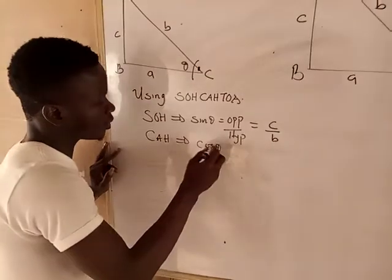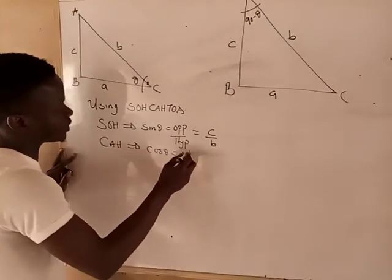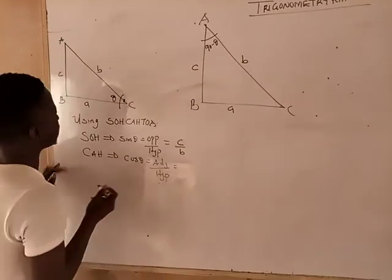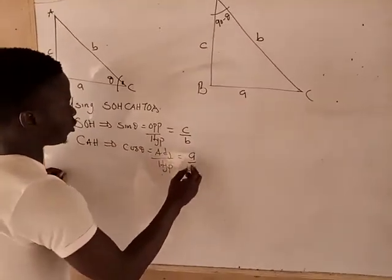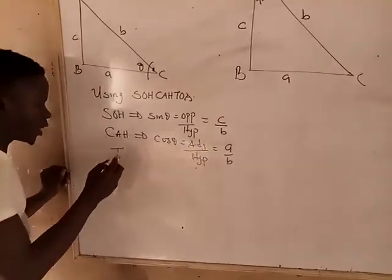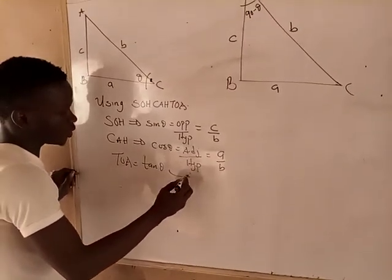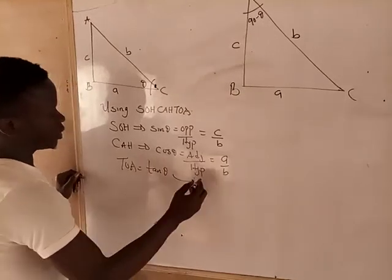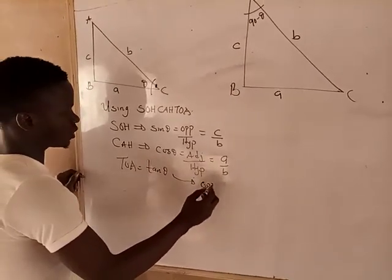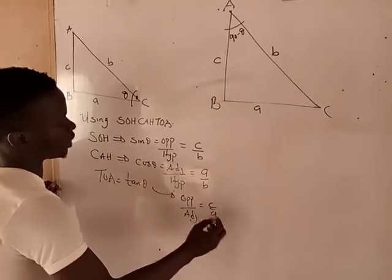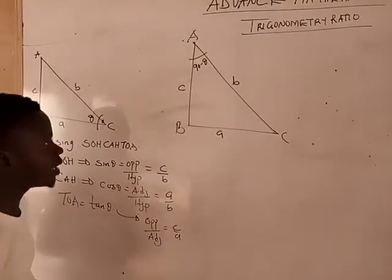Cosine theta, that is adjacent over hypotenuse, that will be giving us A over B. Tangent theta equals opposite over adjacent, which is C over A.